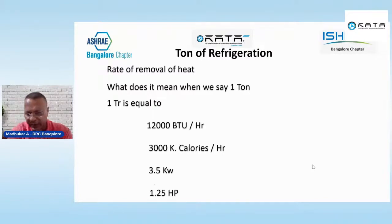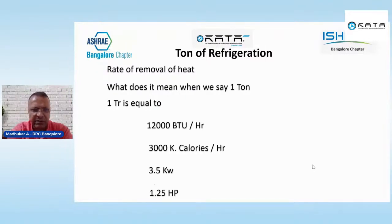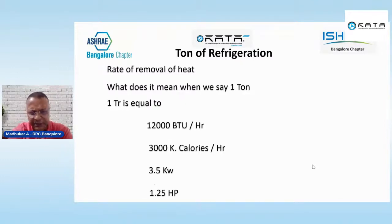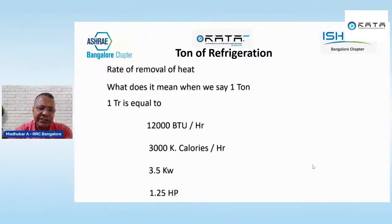One ton of refrigeration equals 12,000 BTU per hour — meaning a 1-ton AC can remove 12,000 BTU of heat in one hour. It is also equivalent to 3,000 kilocalories per hour, 3.5 kilowatts, or 1.25 HP. The kilowatts and HP measurements are generally used in VRF or inverter technology, which is now fast catching up.